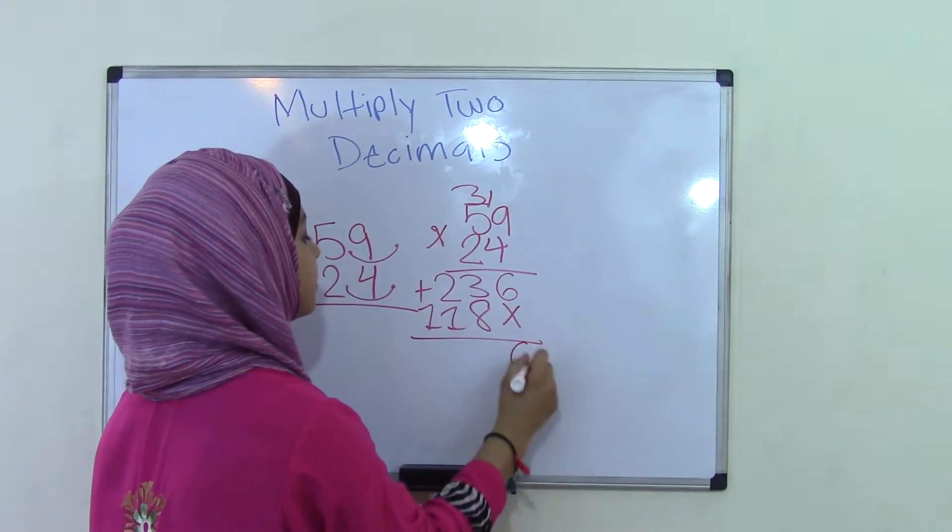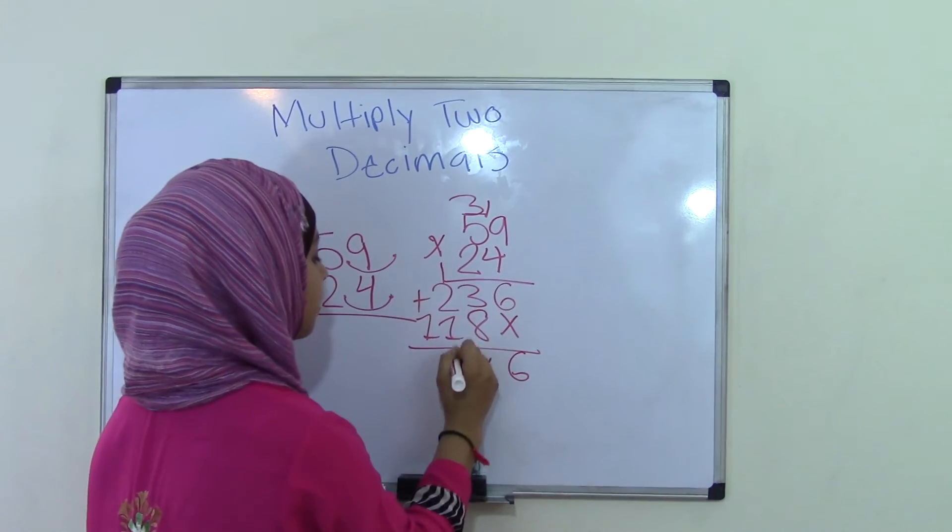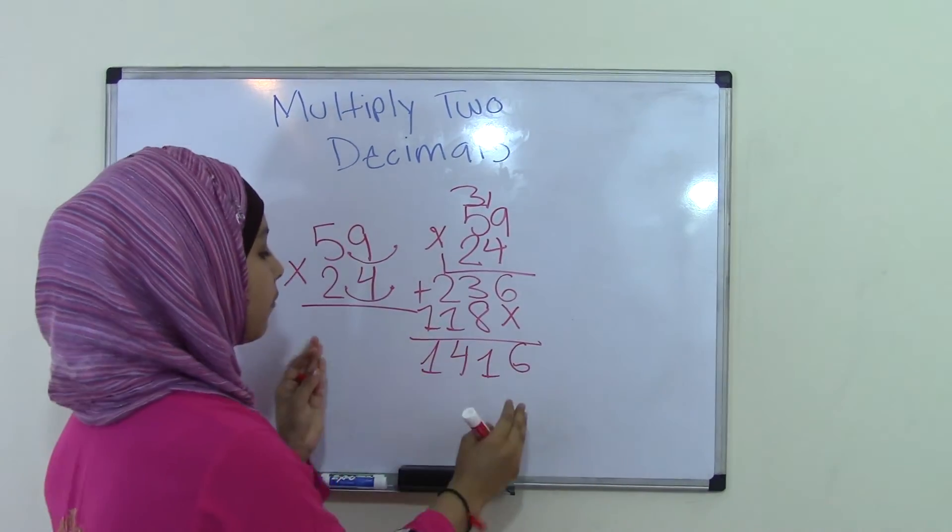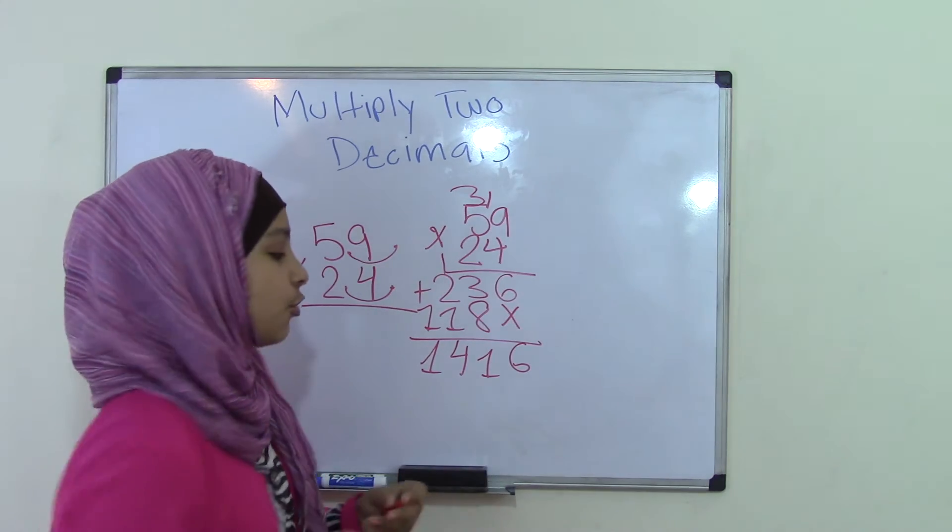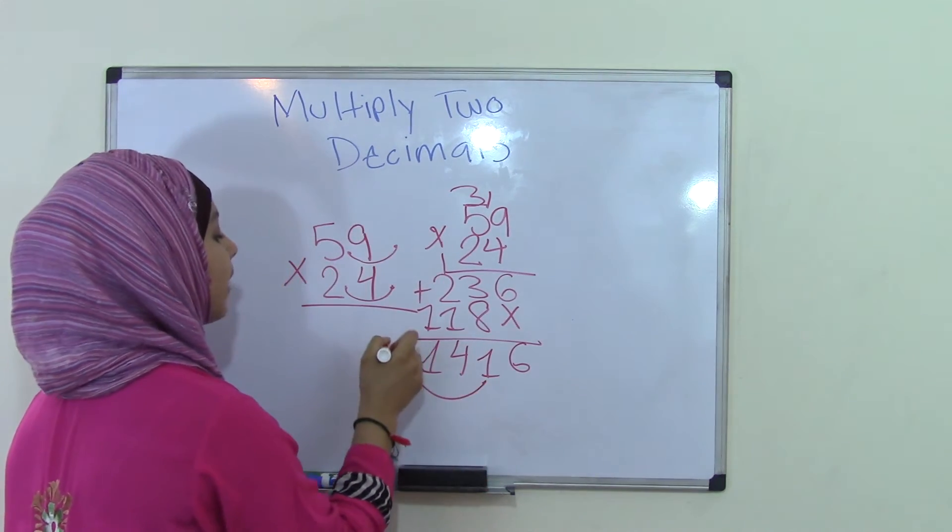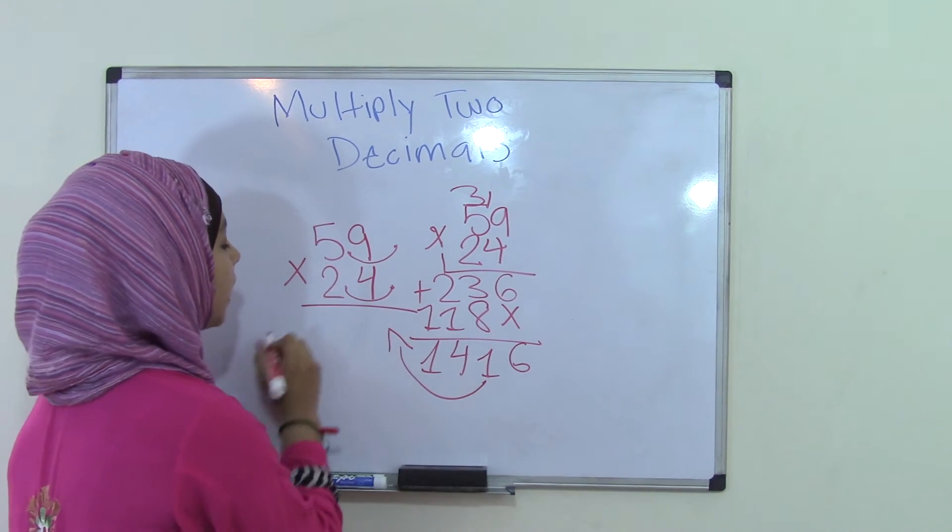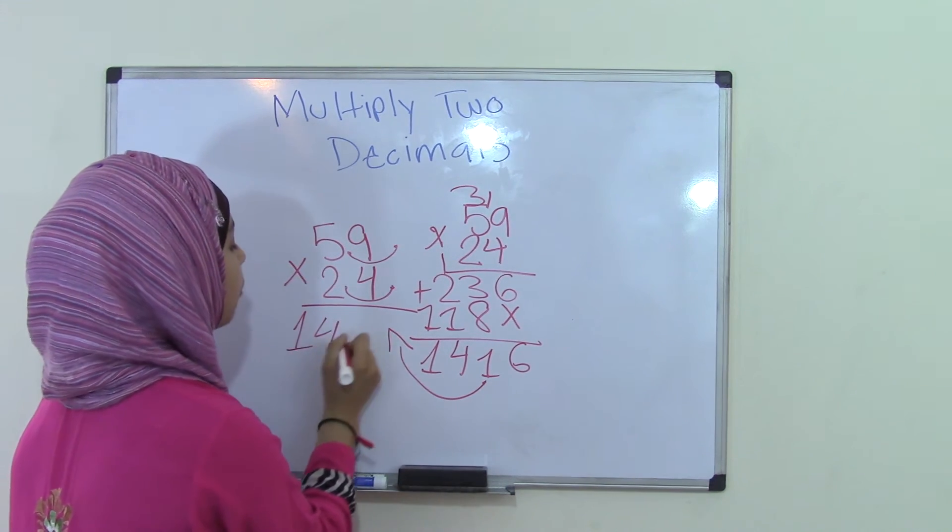So if you add these, it's 1,416. Now remember this. When you have your product, that does not mean that you're finished. You have to take this product and go back to the original problem which is 5.9 times 2.4. Put that product down. So that's 1,416.